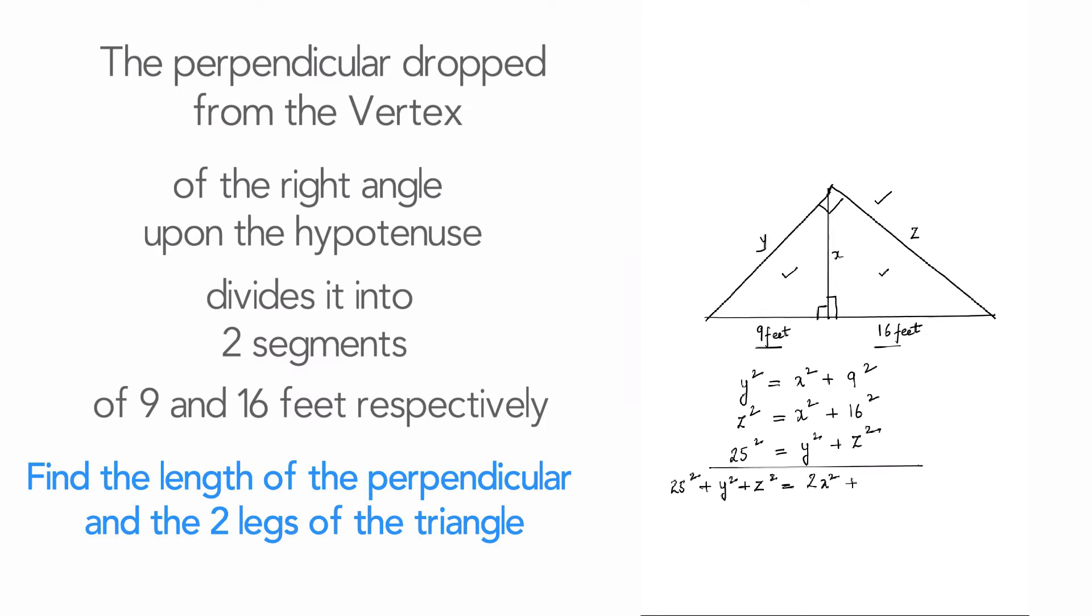So let's add the values on either side and cancel things as necessary. And that leaves us with 625 = 2x² + 81 + 256. So we can solve for x and that gives us x² = 144 or x = 12.